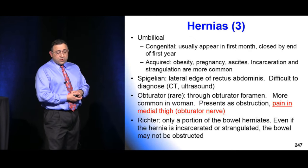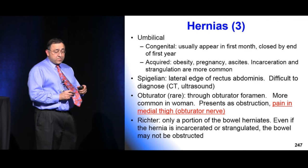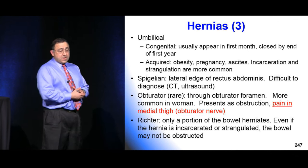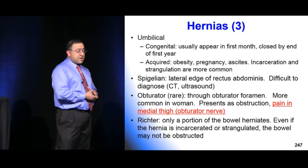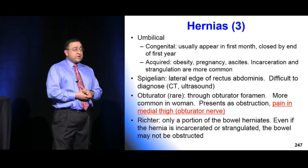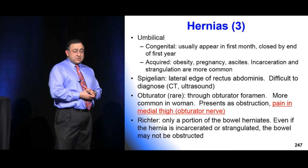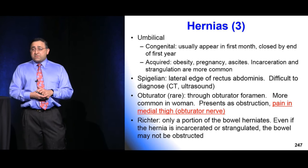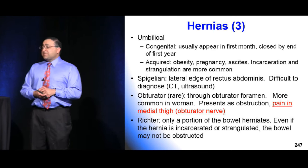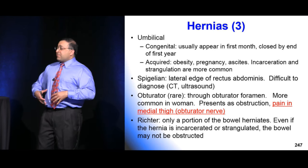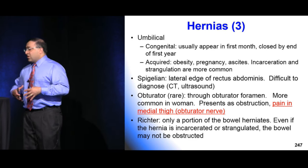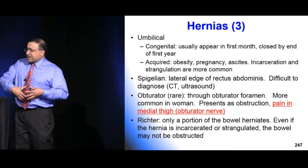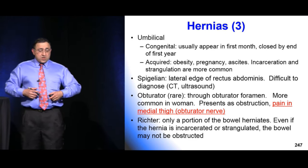Umbilical hernias are common in the very young — they can be congenital or acquired, such as from obesity. Patients with massive ascites may also have an umbilical hernia that pouches outward due to increased intra-abdominal pressure.